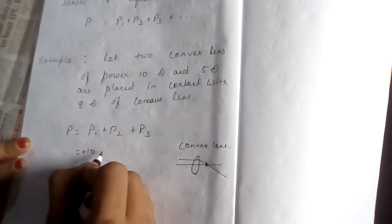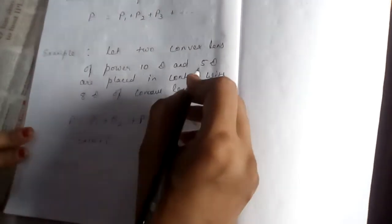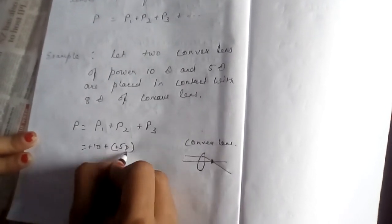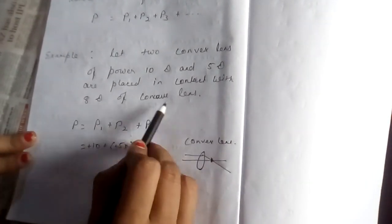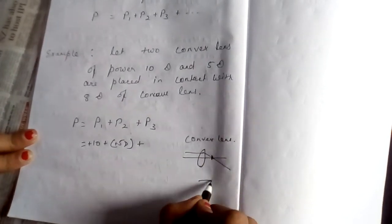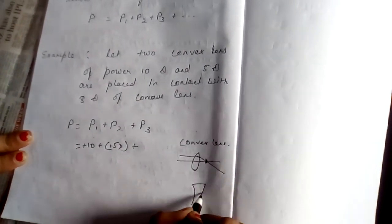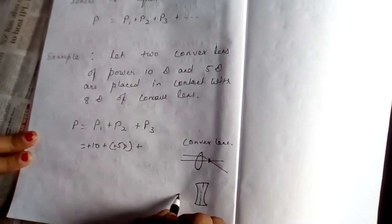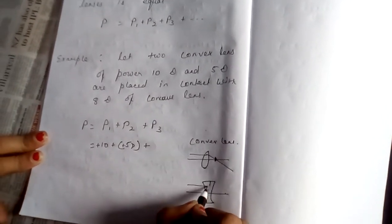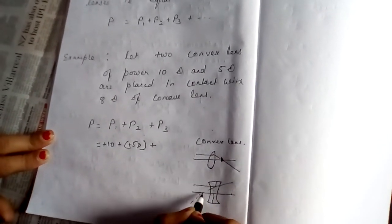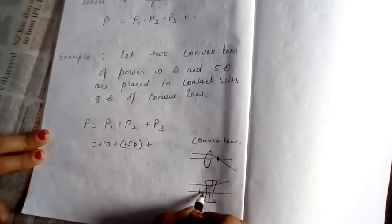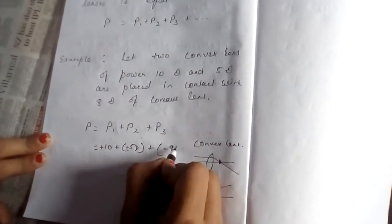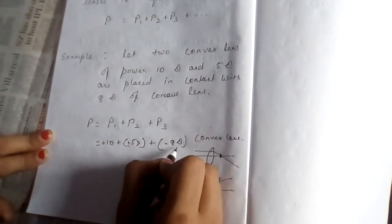These are plus 10 diopter plus 5 diopter. Plus concave lens, focal length anywhere we are measuring the left side. Yesterday I have shown you in sign convention. Anywhere we are measuring the left side focal length, that is focus. It is negative.